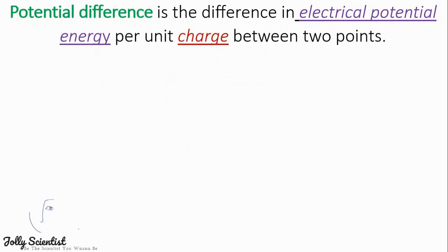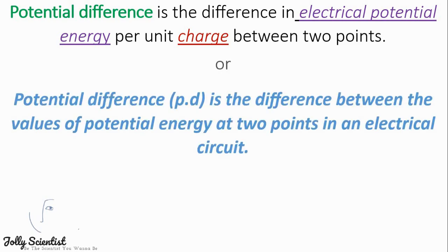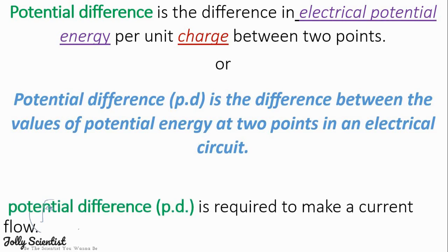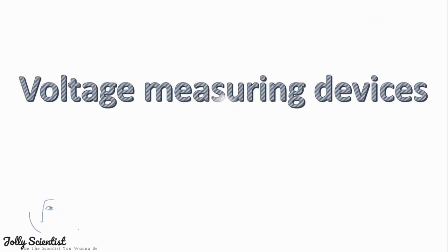Potential difference is the difference in electrical potential per unit charge between two points, or it is the difference between the value of potential energy at two points in an electrical circuit. Potential difference is required to make current flow.